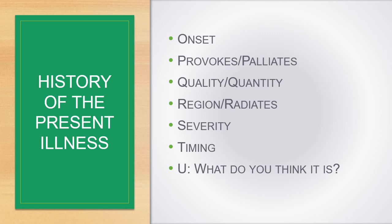The history of the present illness includes questions we refer to as the OPQRSTU. When did it start? What were you doing? What makes it better or worse? Can you tell me how it feels? Where is it? Where else does it go? How bad is it on a scale of 1 to 10? How has it changed since it started? What do you think is going on? In addition, ask very pointed questions to seek clarification about the specific illness or injury.